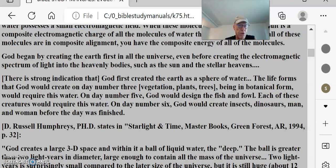This is a strong indication that God first created the earth as a sphere of water. The life forms that God would create on day number three vegetation, plant, and trees, being in botanical form, would require this water. And day number five, God would design the fish and the fowl. Each of these creatures would require this water. And day six, God would create insects, dinosaurs, man, and woman before the day was finished.